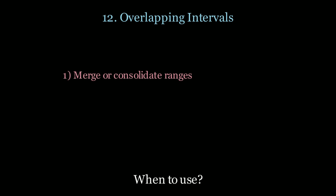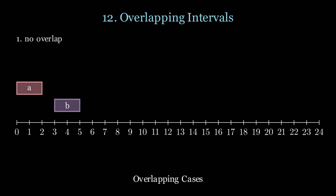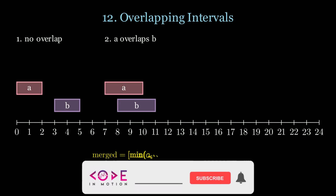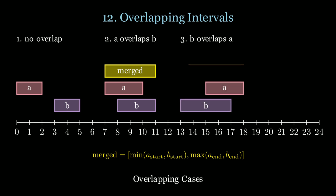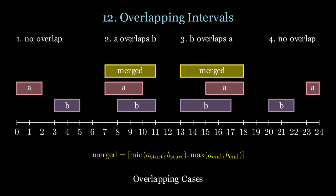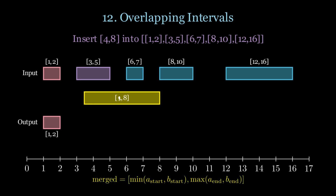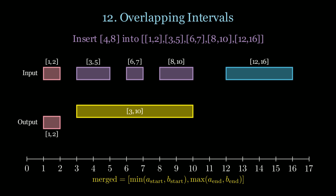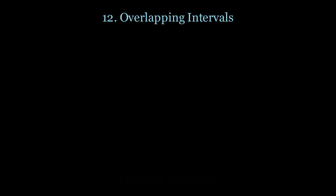Next, overlapping intervals. Use this when you want to merge or consolidate ranges, schedule or find conflicts such as meeting rooms, or find gaps or missing intervals. If there is no overlap, we can't merge A and B. If A and B overlap, the merged interval is the minimum of the two starts and the maximum of the two ends. For example, inserting interval 4–8 into a list: 1–2 has no overlap so we carry it; 3–5 overlaps so we expand the merged interval; 6–7 is contained so nothing changes; 8–10 forces another expansion; 12–16 does not intersect, giving us the final output. For more practice, look at the following LeetCode questions.